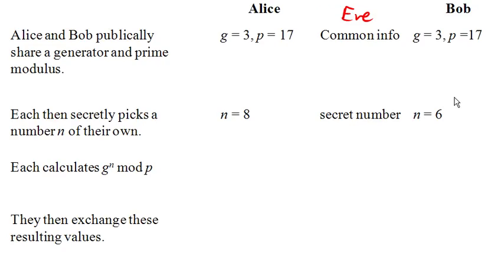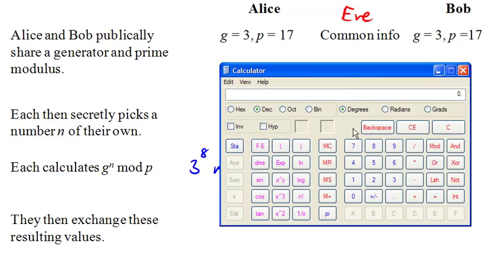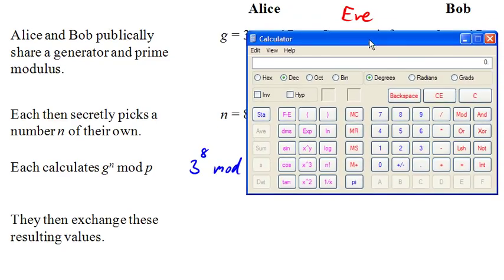So Alice and Bob are now going to compute generator to the n mod p. So in this case for Alice, it's going to be 3 to the 8th mod 17. So let's go ahead and figure out what that is. I'm going to calculate 3 to the 8th power. 3 to the 8th power is 6561.